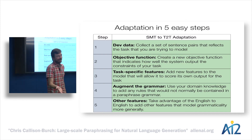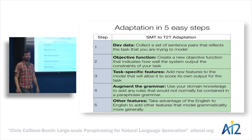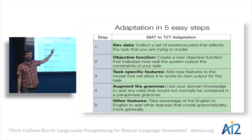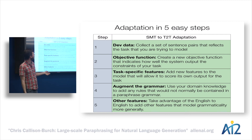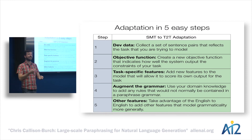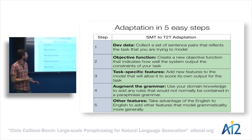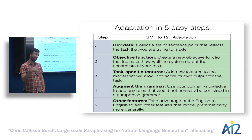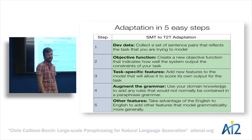That's how we do adaptation — five easy steps. If you want to apply this machinery to your own text-to-text generation application: collect development data illustrating the type of transformations you want; change BLEU into something more sensible for your particular task; add in features that help the model understand and model the task; optionally augment the grammar with task-specific information; and potentially take advantage of the fact that you're operating within a single language by adding in other monolingual signals.